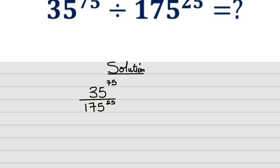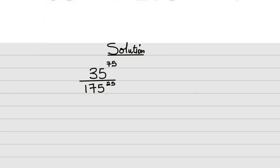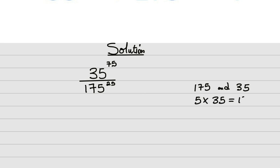Hence we need to improvise — we need to bring out some tricks to actually solve this question. Do you know that there's a relationship between 175 and 35? Yes, because 5 times 35 gives us 175.